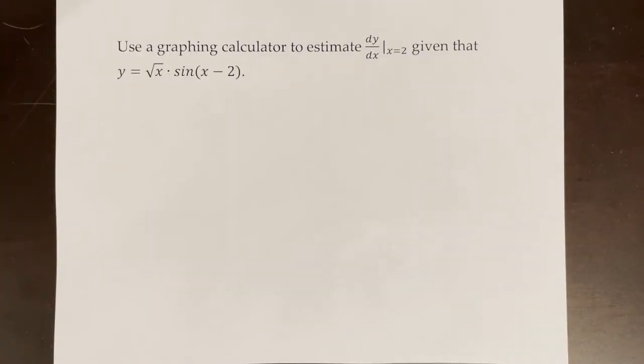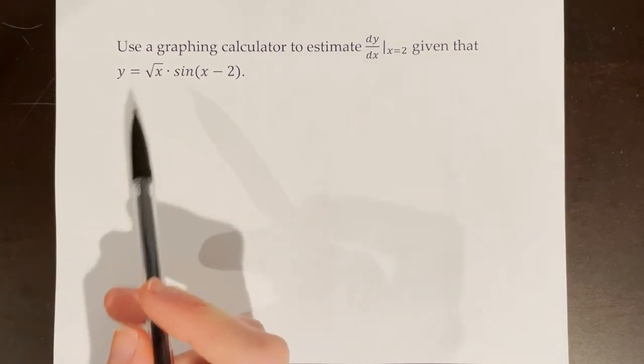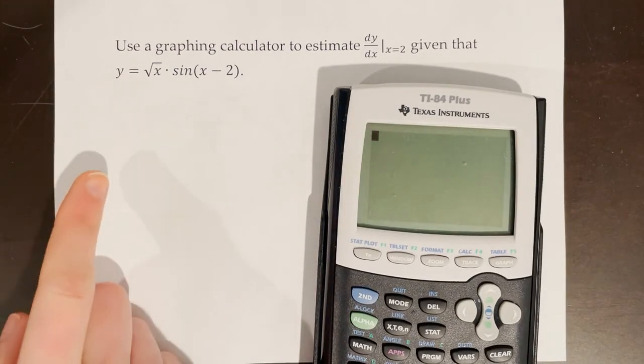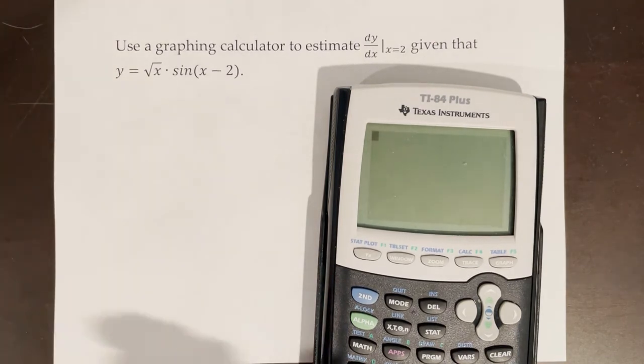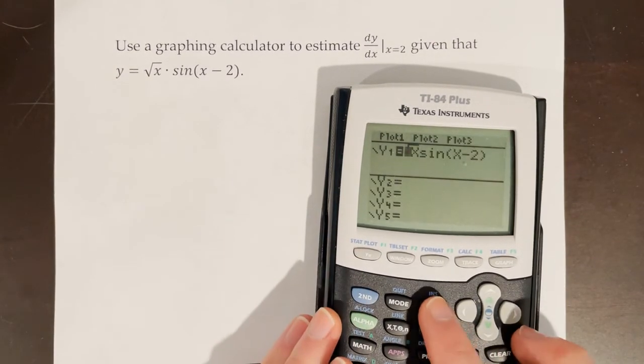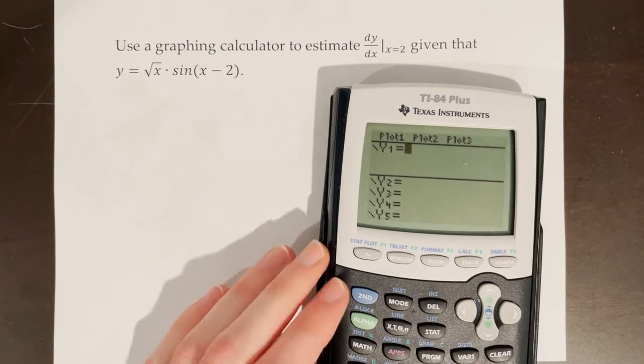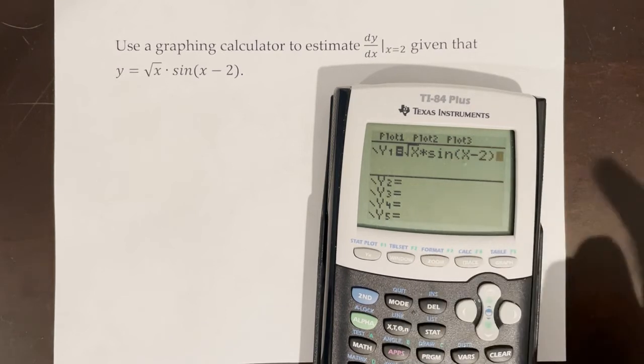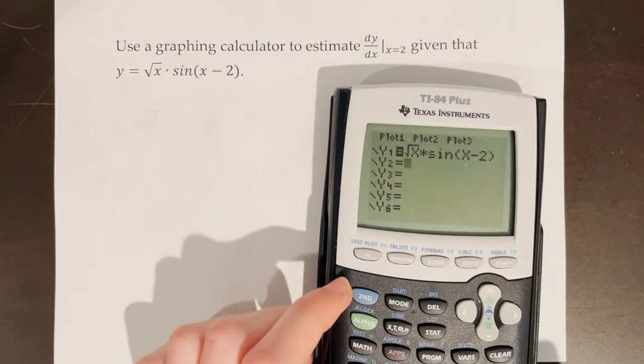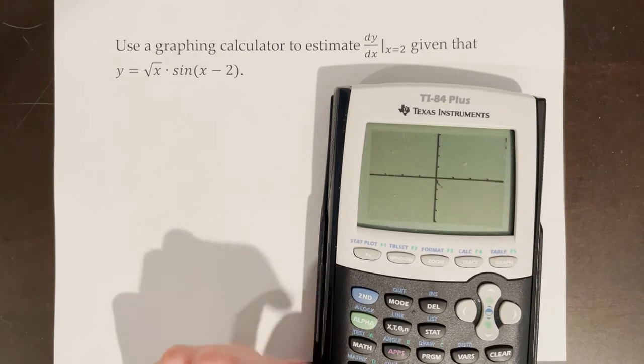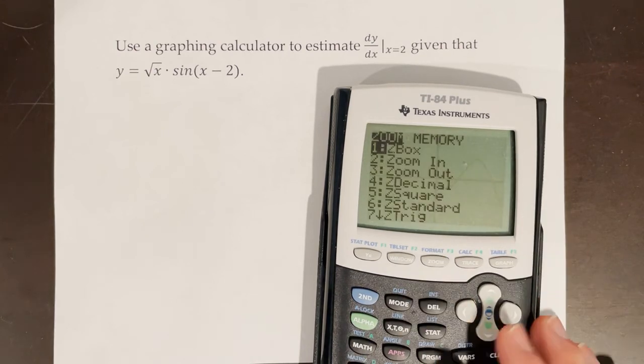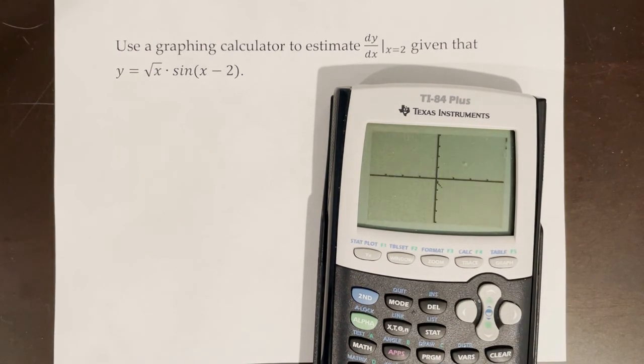Use a graphing calculator to estimate the derivative at x equals 2 given that y equals root x times sine of x minus 2. Since it asks me to estimate, I'm going to do a similar process to what I did with the graph. So first I'm going to plug the function into my graphing calculator. And since we're dealing with sine, it's important that we switch our calculator to radian mode if you haven't done that already. Then I'm going to have it graph my function. And I want the zoom window to be on zoom trig because I'm dealing with a trig function.